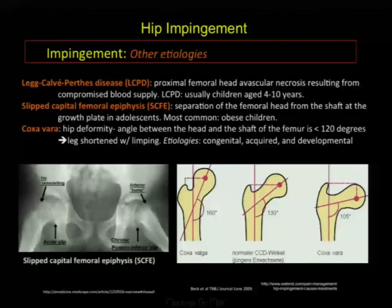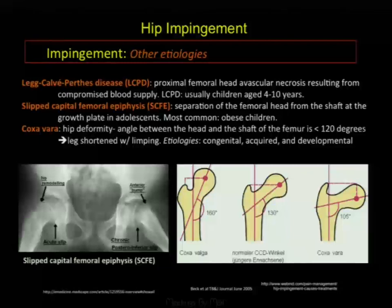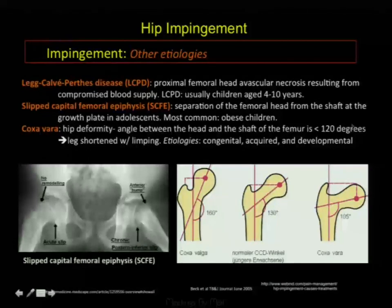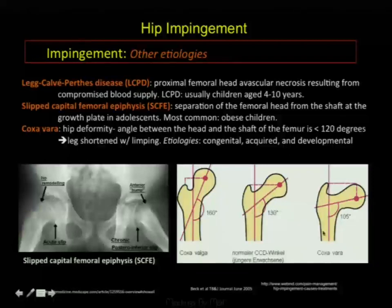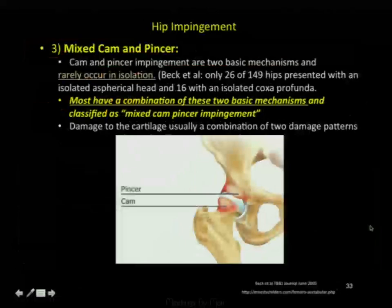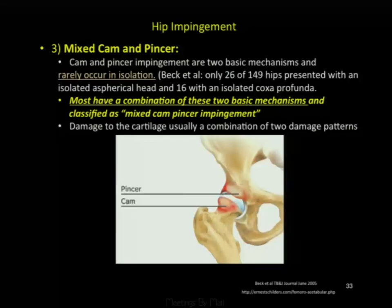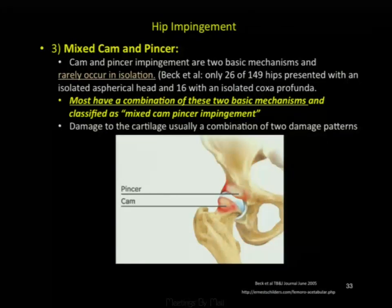Other etiologies include Legg-Calvé-Perthes disease (proximal head avascular necrosis in children ages 4 to 10), slipped capital femoral epiphysis (most common in obese children), and coxa vara, where the normal neck-shaft angle of 130 degrees is reduced to approximately 105 degrees. Beck showed that only 26 of 149 hips presenting with FAI had isolated aspherical head or coxaprofunda. Most patients have a combination of the two mechanisms, classified as mixed CAM-pincer impingement.